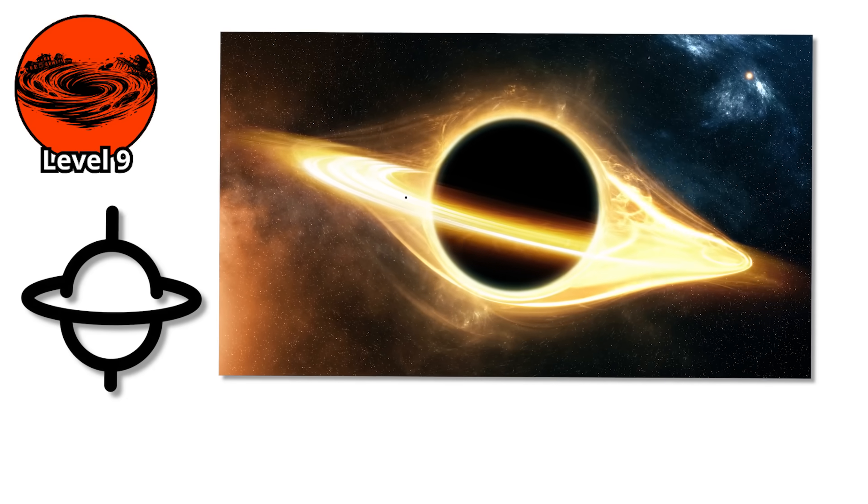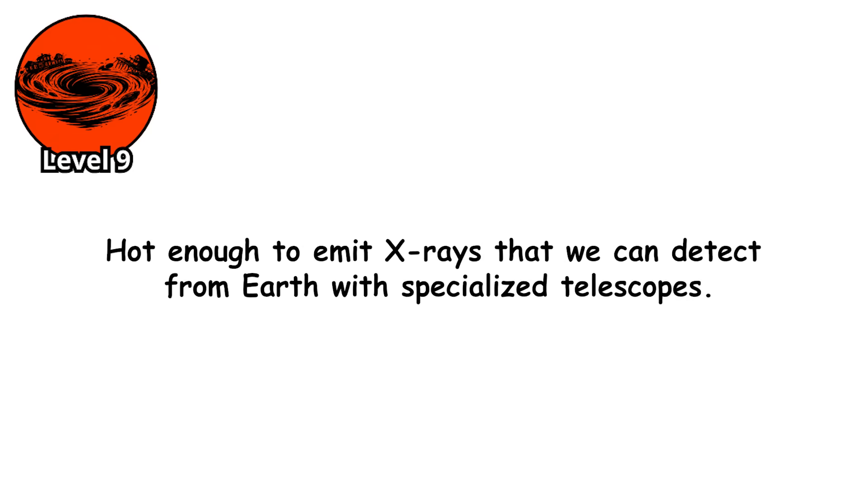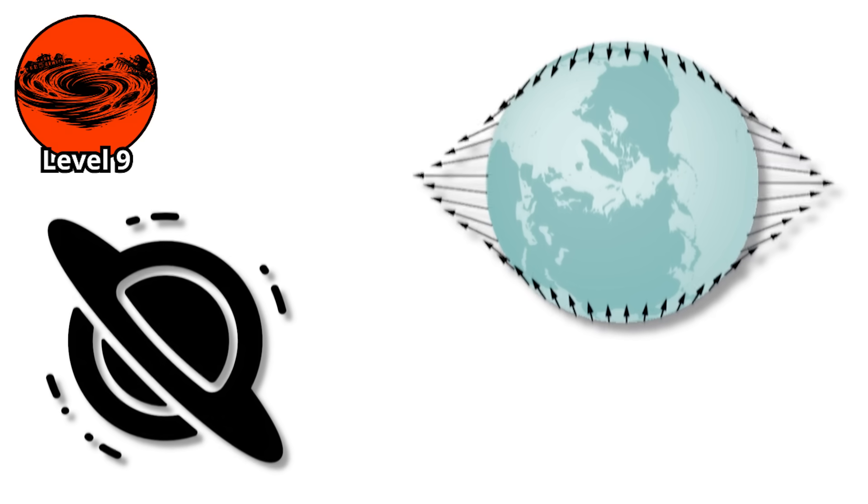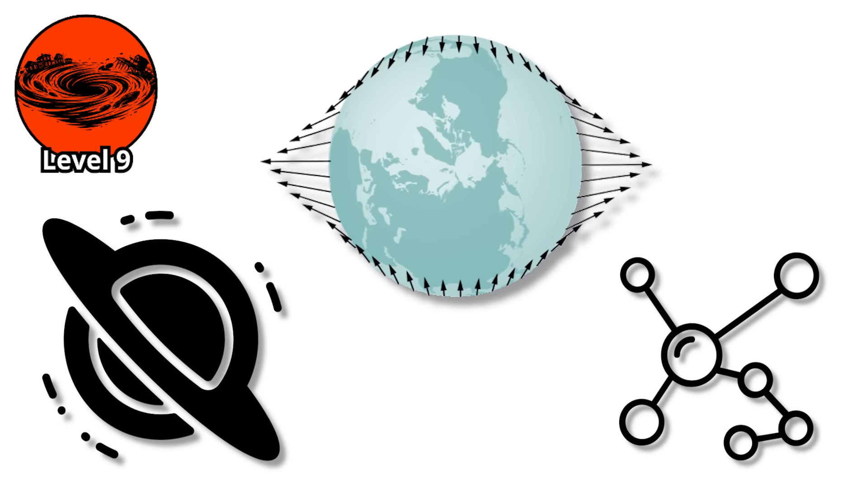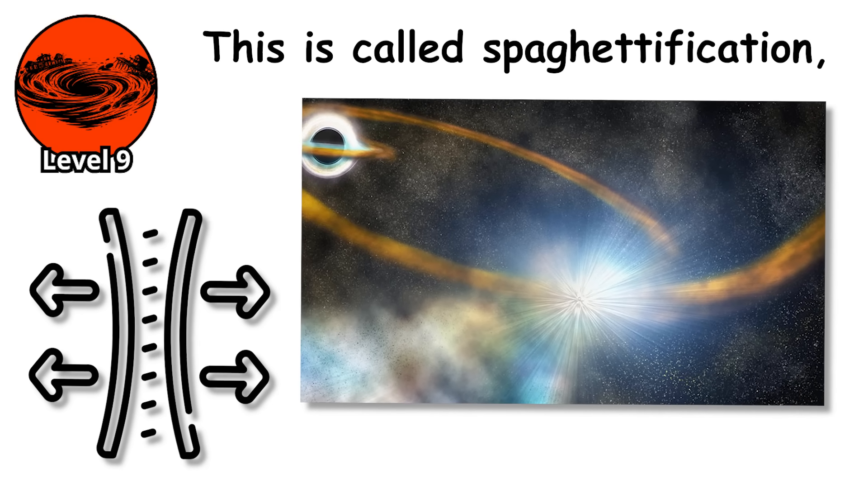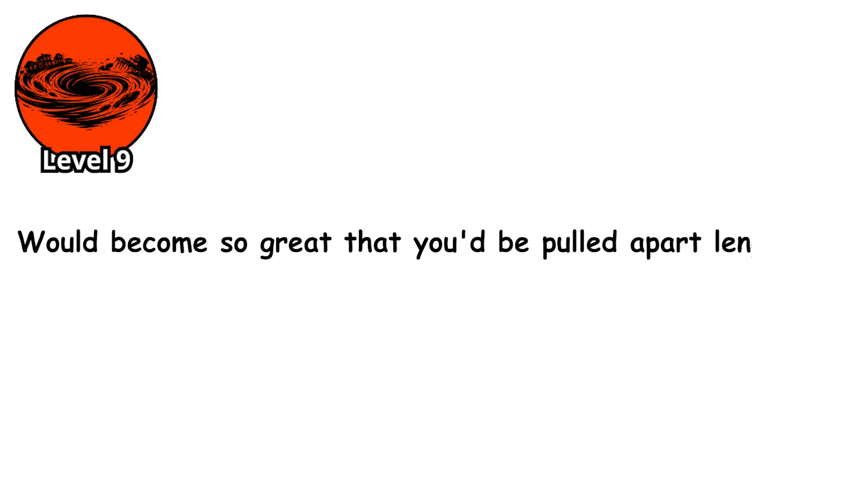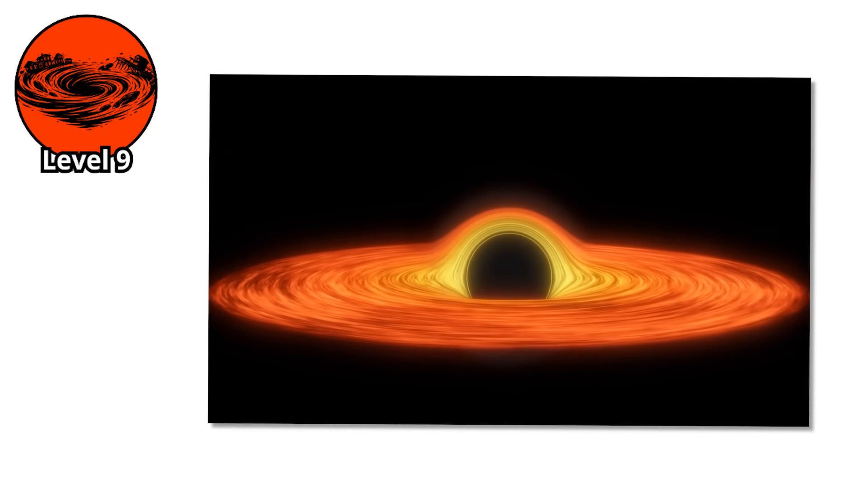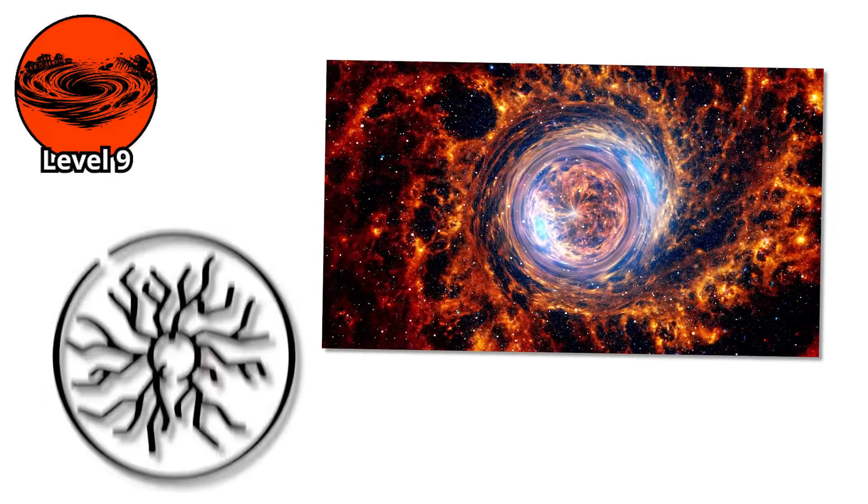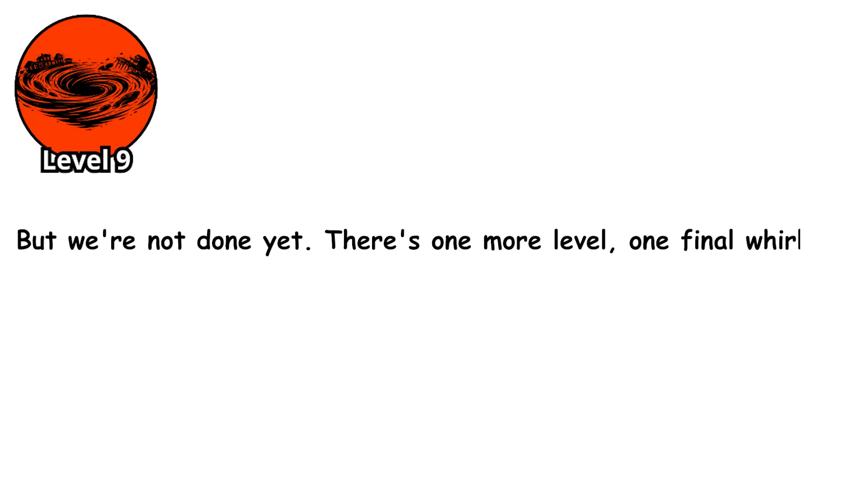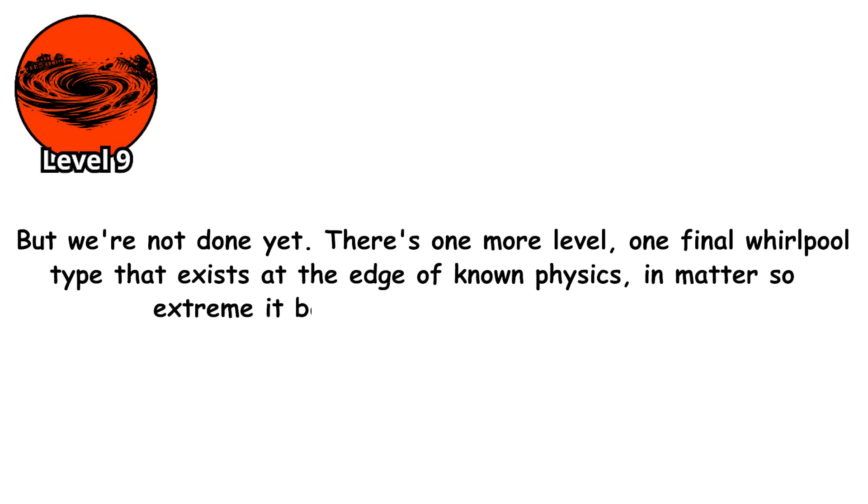As material orbits closer to the black hole, it accelerates, heats up through friction with surrounding material, and begins radiating enormous amounts of energy. The inner regions of an accretion disk around a stellar mass black hole can reach temperatures of millions of degrees, hot enough to emit x-rays that we can detect from Earth with specialized telescopes. But it's not just hot, it's being torn apart on an atomic level. Tidal forces near a black hole are so extreme that they overcome the atomic bonds holding matter together. This is called spaghettification, the technical term for being stretched into a long, thin stream of atoms. If you fell toward a black hole, the gravitational difference between your feet and your head would become so great that you'd be pulled apart lengthwise while being compressed sideways. The accretion disk is where this happens on a massive scale. Stars, planets, gas clouds, all reduced to superheated plasma spiraling inward in a cosmic whirlpool that can extend for millions of miles. But we're not done yet. There's one more level, one final whirlpool type that exists at the edge of known physics, in matter so extreme it barely qualifies as matter at all.